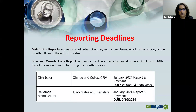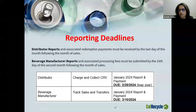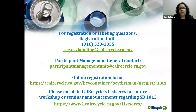Here is a brief overview of reporting deadlines. Distributor reports and associated redemption payments must be received by the last day of the month following the month of sales. Beverage manufacturer reports and associated processing fees must be submitted by the 10th day of the second month following the month of sales. For example, for a distributor, the January 2024 reporting and payment period is due February 29th, 2024. For the beverage manufacturer, the January 2024 reporting and payment period is due March 10th, 2024.